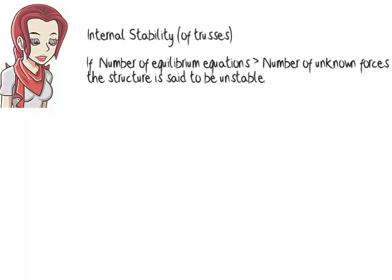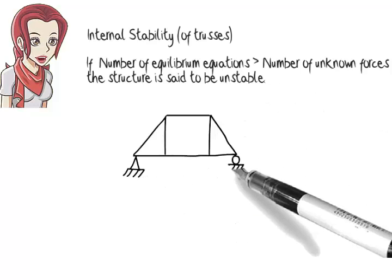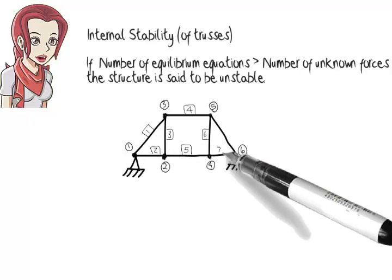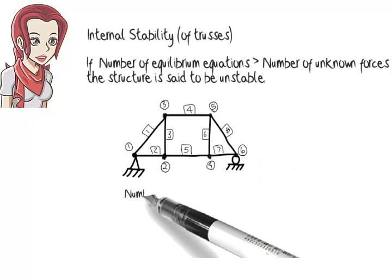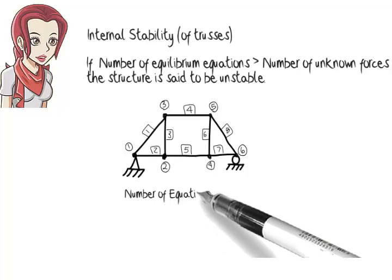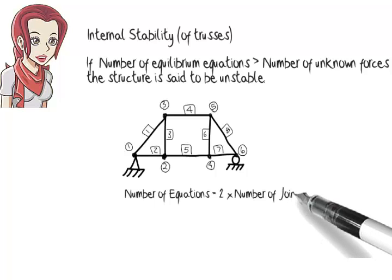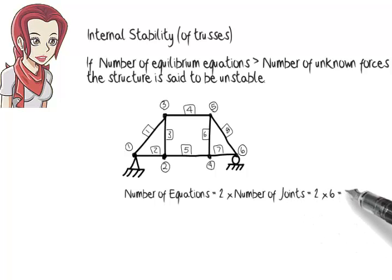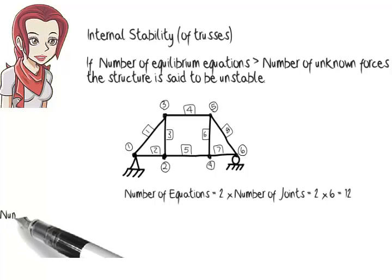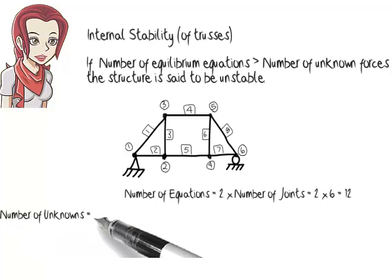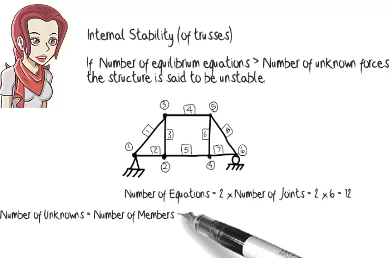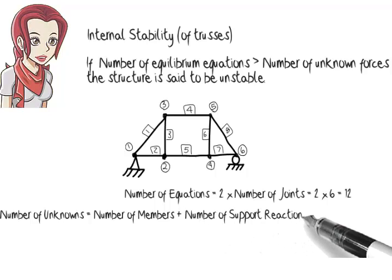Here is an example. This truss has six joints and eight members. Since the number of equilibrium equations for a truss equals two times the number of its joints, we have two times six or twelve equilibrium equations. The number of unknown forces equals the number of truss members plus the number of support reactions. Here, we have eight plus three or eleven unknowns. Since the number of equations turns out to be greater than the number of unknowns, then we conclude that the truss is unstable.